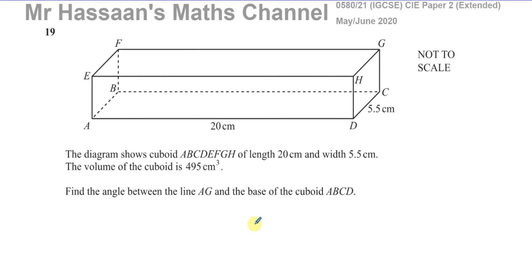Okay, now for number 19 from this paper, which is the May-June 2020 paper 2, variant 1 from the International GCSE, IGCSE from Cambridge.